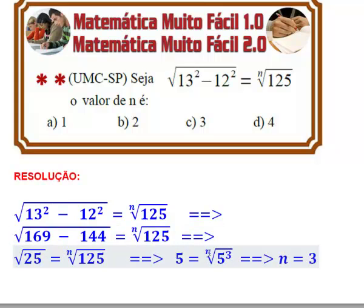Gente, esse n precisa ser quanto? Olha, se o n for 1, não vai dar, porque o n igual a 1 não se aceita. Se o n for 2, eu teria a raiz quadrada de 5 ao cubo. Não. Isso não é igual a 5. Se esse n for 3, olha só: 3 índice, 3 expoente, eu posso cortar. Posso cortar 3 com 3. E aí vai ficar como? 5.